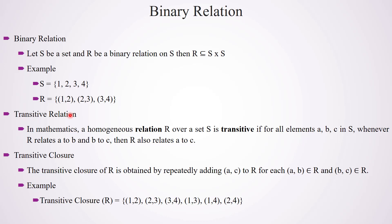Next is transitive relation. In mathematics, a homogeneous relation R over a set S is transitive if for all elements a, b, c in S, whenever R relates a to b and b to c, then R also relates a to c. In this example, there is a relation (1,2) and also (2,3), so with the transitive property we can say relation (1,3) is also existing. Similarly, there is a relation from 2 to 3 and also from 3 to 4, so we can say 2 is related to 4 also. That is the meaning of transitive relation.